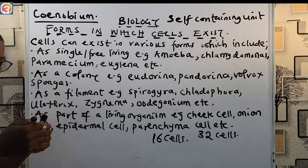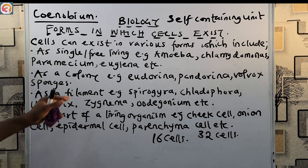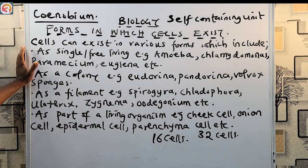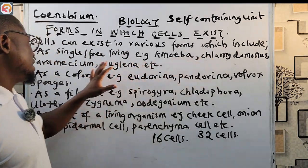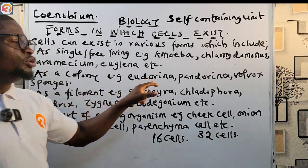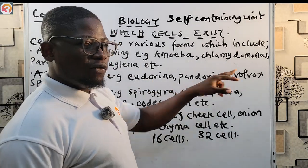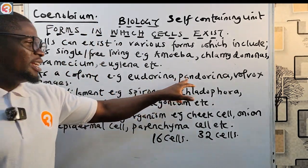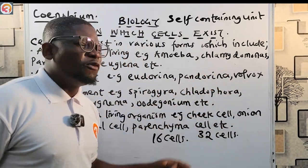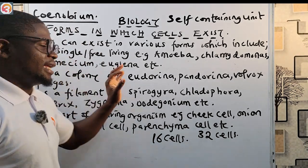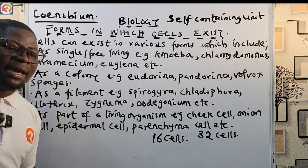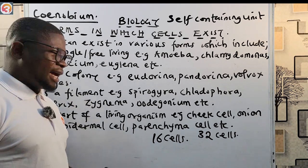To summarize so far: form one is single or free living (unicellular) — e.g., Amoeba, Chlamydomonas, Paramecium, and Euglena. Form two is as a colony — e.g., Eudorina (32 cells), Pandorina (16 cells), Volvox (hundreds/thousands of cells), and sponges. Form three is as a filament, also called multicellular or filamentous.